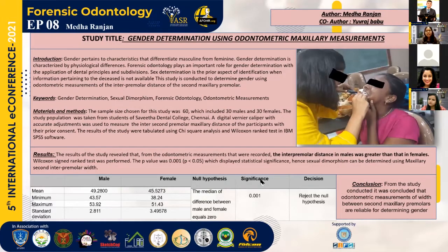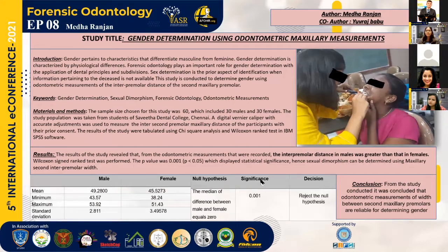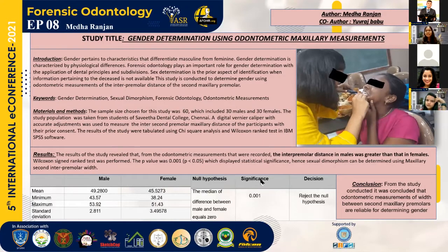The results indicated that the inter-premolar distance in males was greater compared to that in females. The p-value obtained was 0.001, which is less than 0.05, rejecting the null hypothesis. This indicates that the result was statistically significant, and it can be concluded that gender can be determined using odontometric maxillary measurement using the second premolar. Thank you.